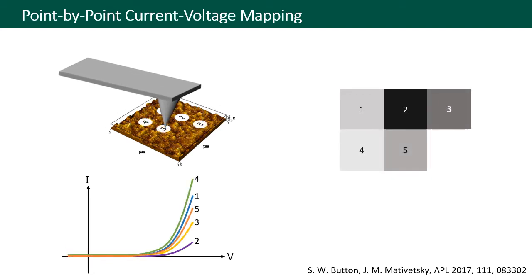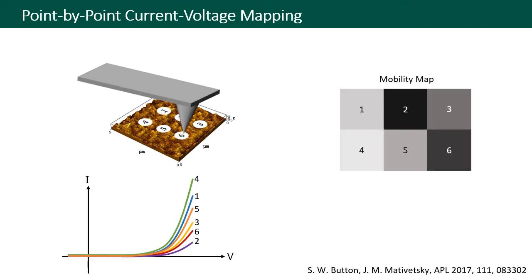This approach involves bringing a metal-coated probe into contact with the sample using a controlled force, measuring a local current-voltage curve, retracting the probe, and then moving to the next sample location. By analyzing thousands of current-voltage curves, we can construct nanoscale charge carrier mobility maps.